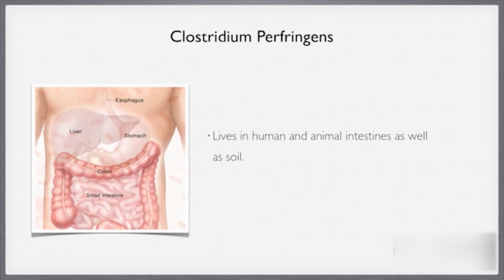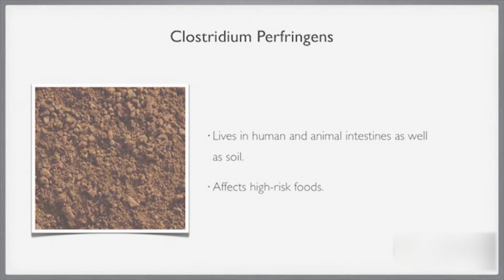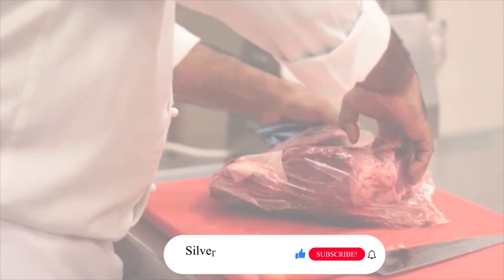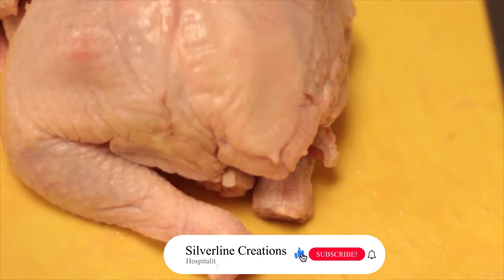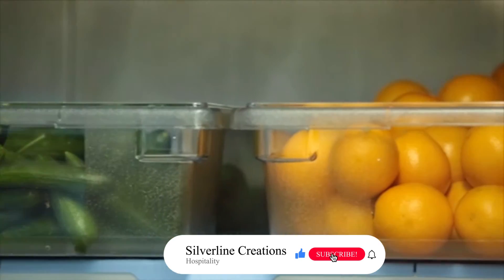Next we have Clostridium perfringens. Clostridium perfringens lives in human and animal intestines, as well as in soil. This bacterium can affect high-risk foods such as raw meats, poultry, and raw vegetables.